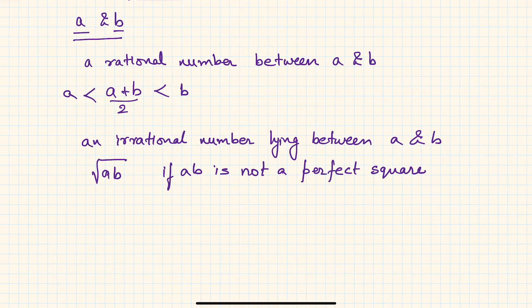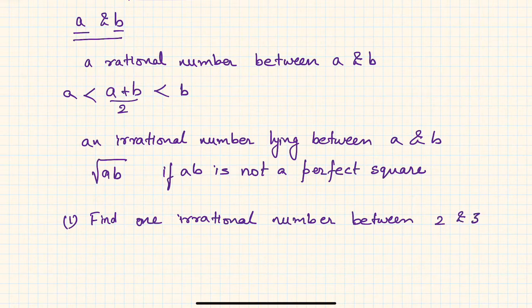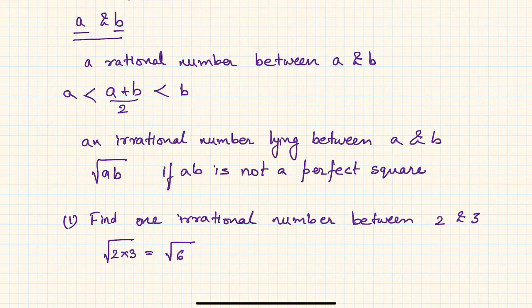Let us take a few examples. The question is: find one irrational number between 2 and 3. Clearly, it is nothing but √(2 × 3) = √6. So √6 is an irrational number lying between 2 and 3.